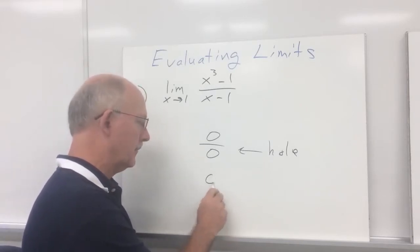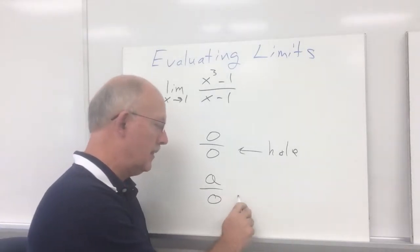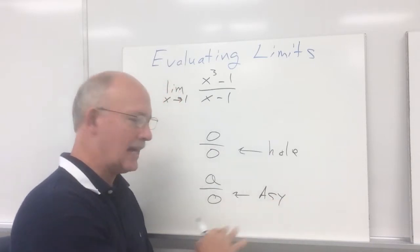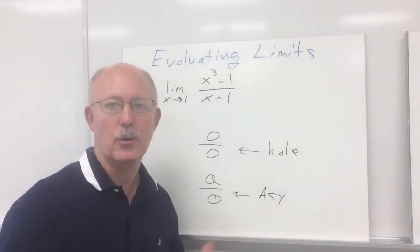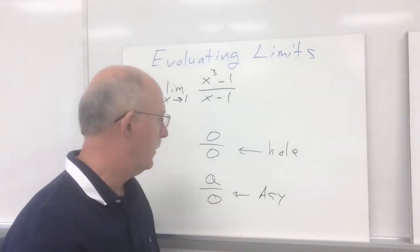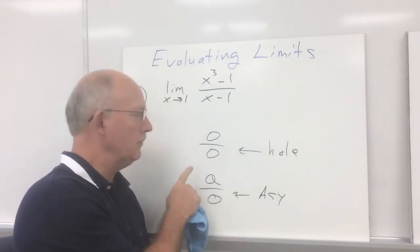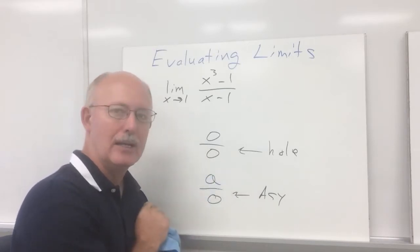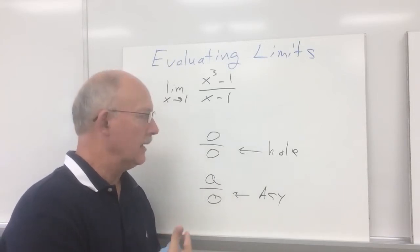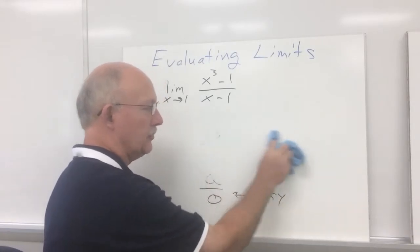If you end up with some number over zero — zero in the denominator — this would indicate an asymptote. An asymptote you're not going to get rid of. If there's a vertical asymptote, there's simply no limit. But zero over zero indicates a hole, and I'm going to show you what to do. You've got to be able to factor. I call this the factor and cancel technique.